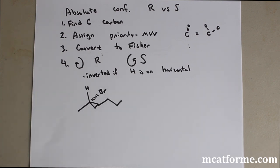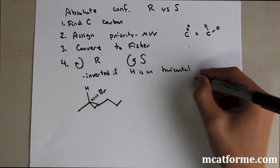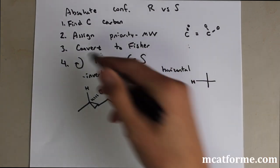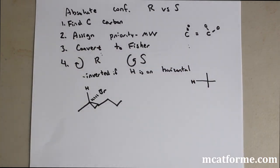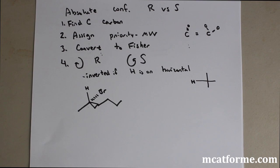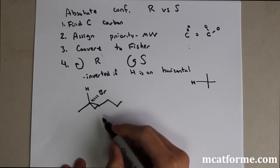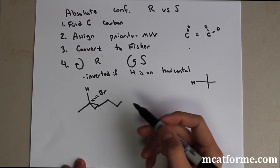The final step is determining R or S based on the priority numbering. If the H — or more precisely, the lowest priority group (number 4) — is on the horizontal of the Fischer projection, then you invert the result: counterclockwise becomes R and clockwise becomes S. Once you understand this, it's very simple and you'll never make mistakes.